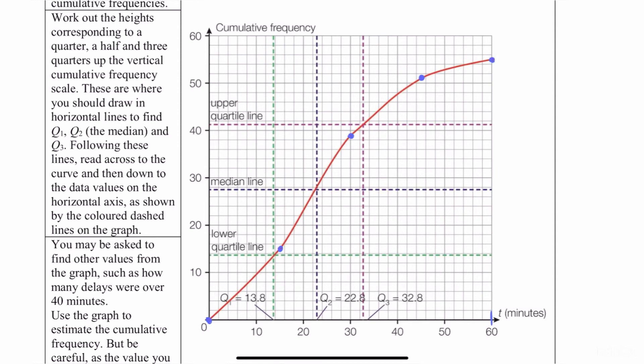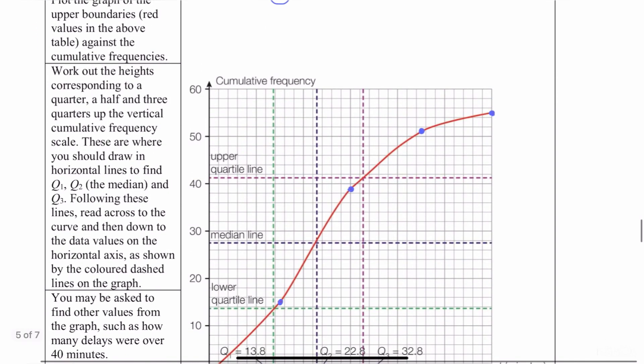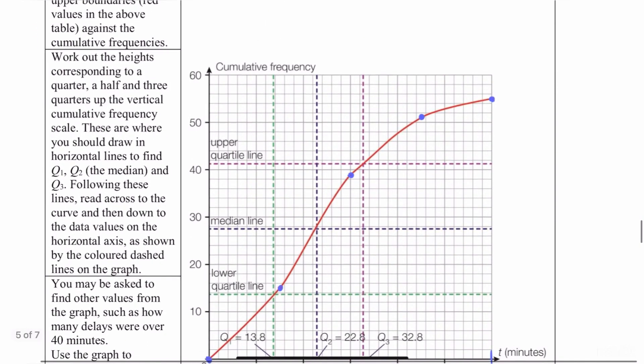Make sure that you end it at whatever the last ordered pair is. Sometimes I see students make a mistake and they get carried away, and they just keep this graph going to wherever they feel like it. That's not the way it works. It has a very clear beginning and a very clear end.